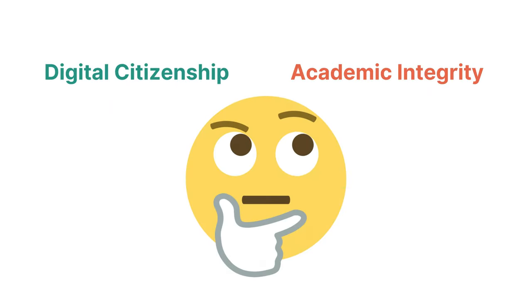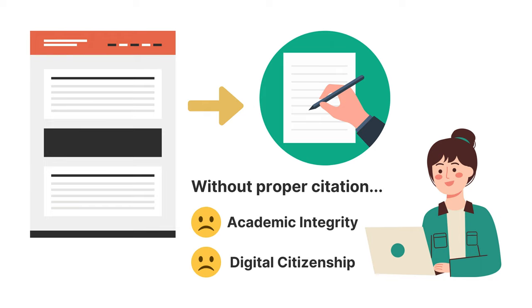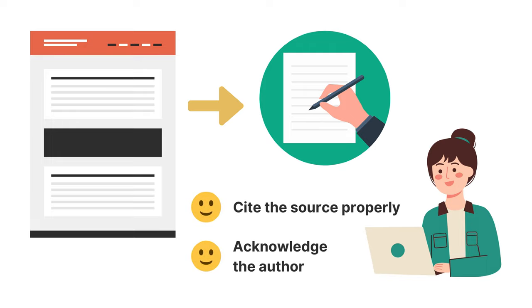So what's the link between digital citizenship and academic integrity? Well, they go hand in hand. Imagine you find a compelling article on the internet that perfectly fits your research paper. If you were to copy and paste that content without proper citation, you will not only be violating academic integrity but also digital citizenship, as using others' work without giving credit to them may violate digital laws. Instead, a responsible digital citizen and an academically ethical individual would properly cite the source and acknowledge the author's work.